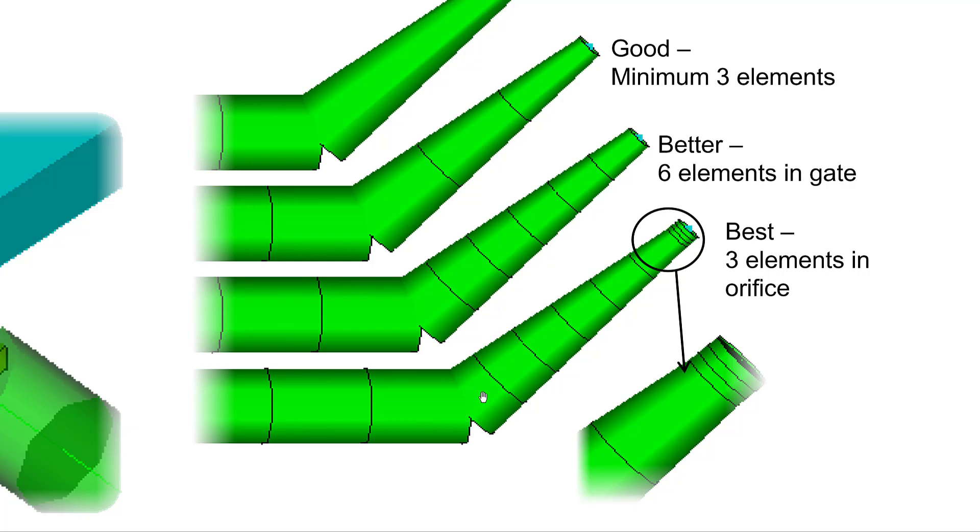The best would be that the long curve of the gate has to be divided further into the portion that lands to the part. For that portion, I assign a constant dimension and then make three elements around it.